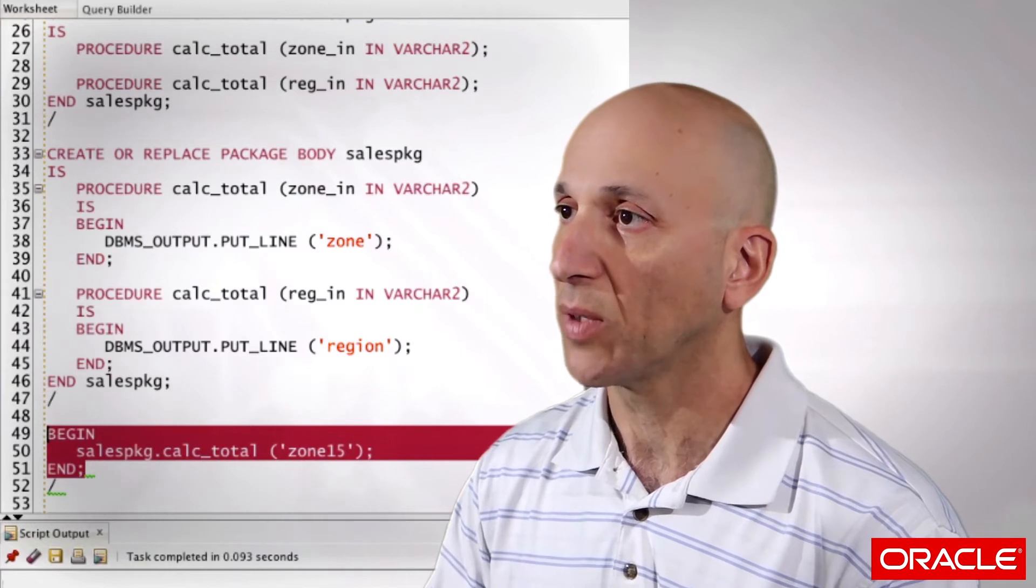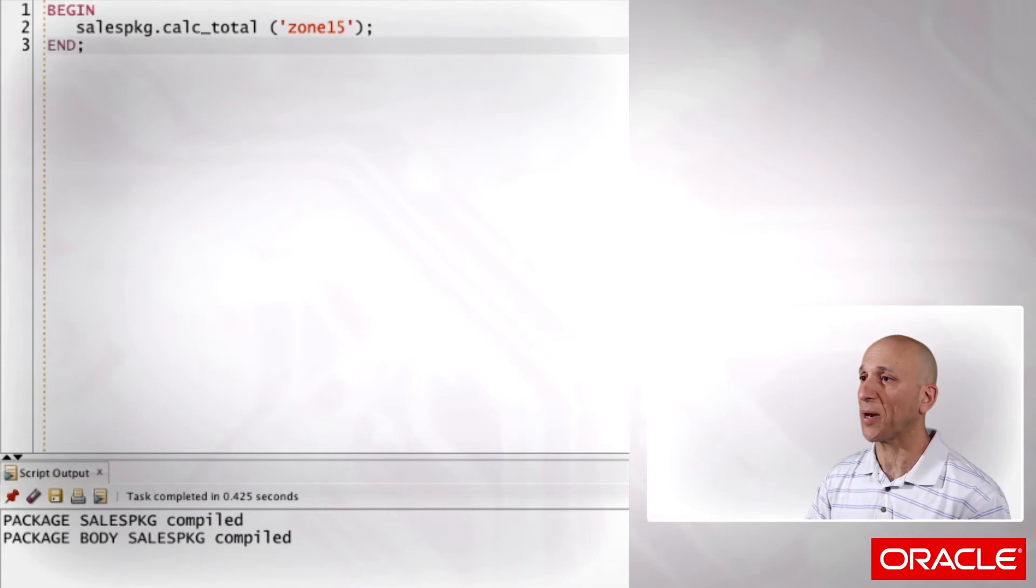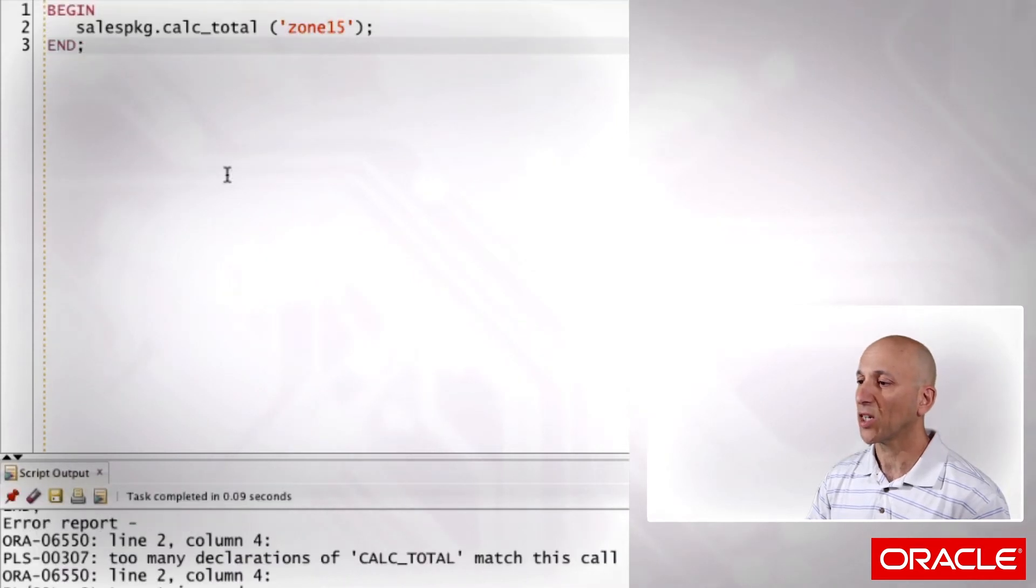Try to call it, passing a string, the zone string. It should use the zone version, right? Run my code, kaboom!